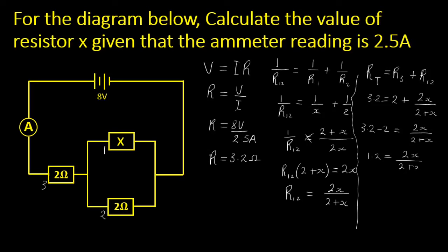If we cross multiply here, you can see that on this side we just have 2x being equals to, so 1.2 times 2 should give us 2.4. 1.2 times x should give us 1.2x.